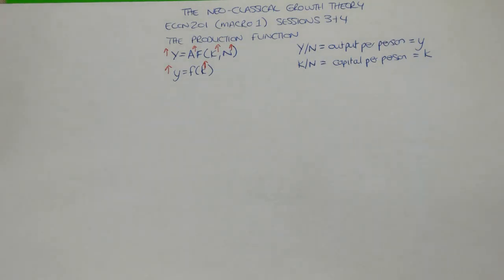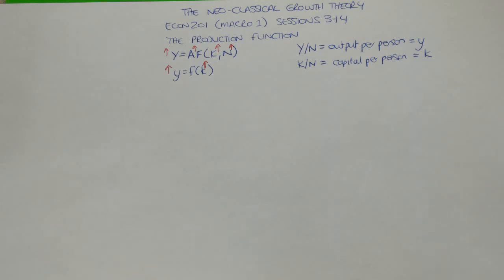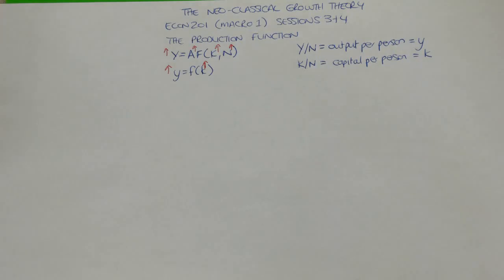The purpose of looking at the production function in per person terms is that we want to understand this per capita production function and translate it into a graphical representation, so that we can link it to some of the other elements of the theory. We want to understand not just that there is a relationship between capital stock per person and output per person, but what that relationship looks like. When we increase capital stock per person, how does output per person increase? Is there a constant relationship, or is it not constant — and if not, what kind of relationship is there?